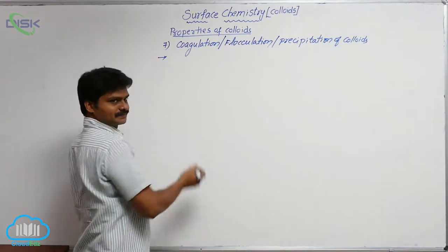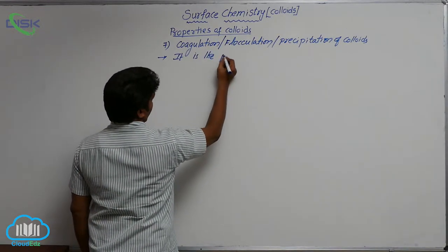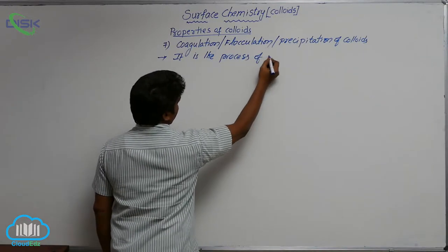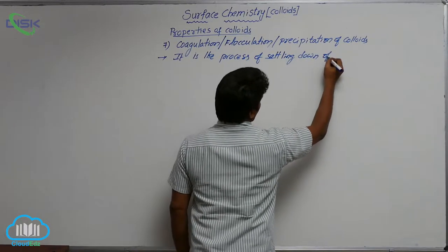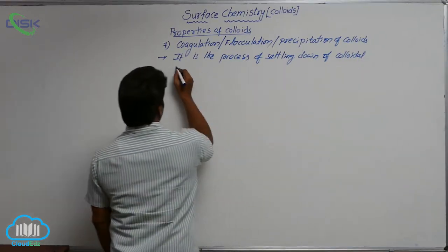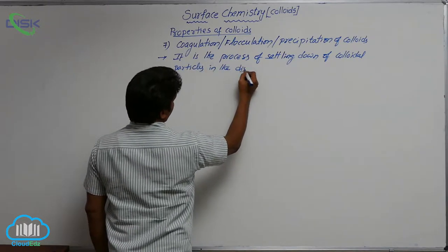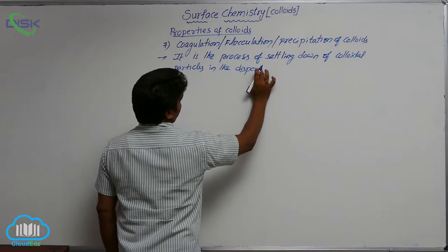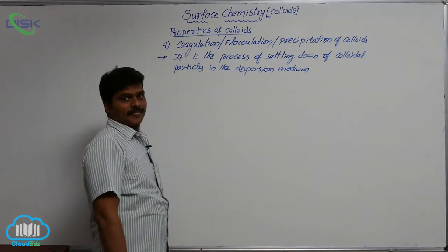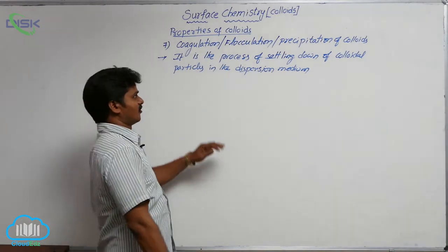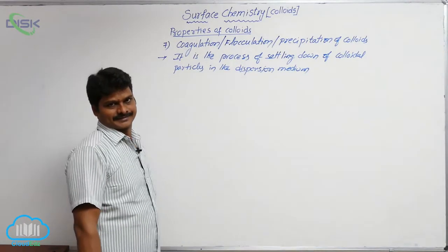So what is coagulation? It is the process of settling down of colloidal particles in the dispersion medium. Settling down of colloidal particles in the dispersion medium is called coagulation, flocculation, or precipitation of colloids.